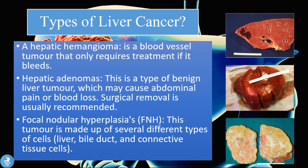Beginning with the benign tumors of the liver, the first one is the hepatic hemangioma. This is a blood vessel tumor that only requires treatment if it bleeds, and above here is a picture of what the hepatic hemangioma actually looks like.